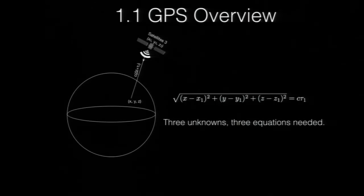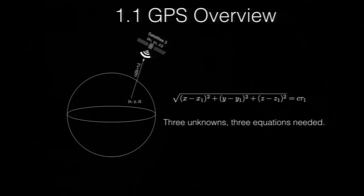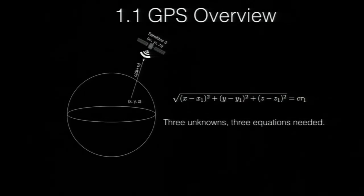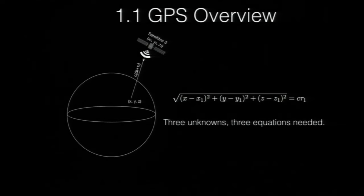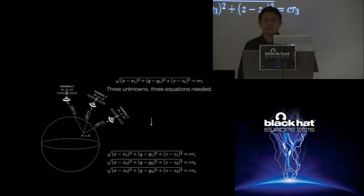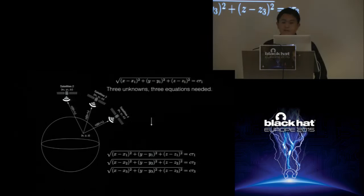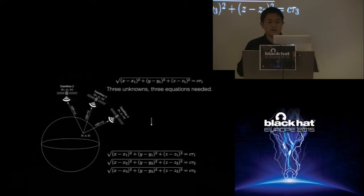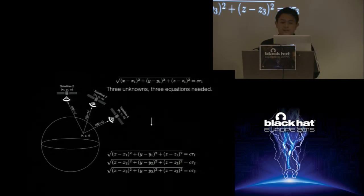Let's look at GPS spoofing. First, let us define the problem of GPS positioning. There is a satellite at coordinates X1, Y1, Z1. We can measure the time it takes for a signal to reach from the satellite to us, which is tau1. With the velocity of light C, we have an equation: the distance from XYZ to X1, Y1, Z1 is equal to C times tau1. We cannot solve it, though, since it has three unknowns. So we add another two satellites whose coordinates are already known — X2, Y2, Z2 and X3, Y3, Z3 — and also measure durations tau2 and tau3, giving us an equation set.